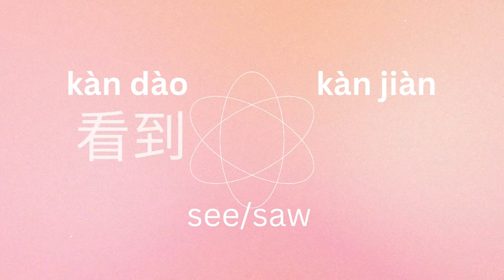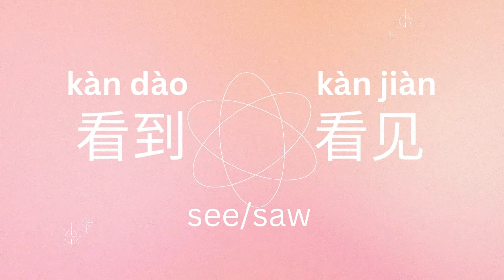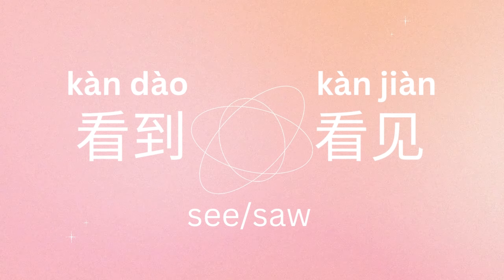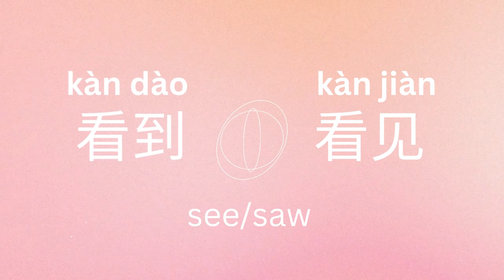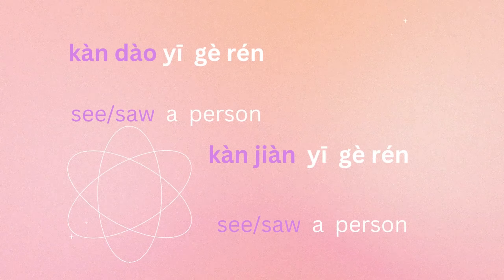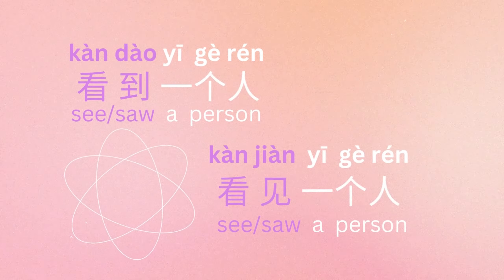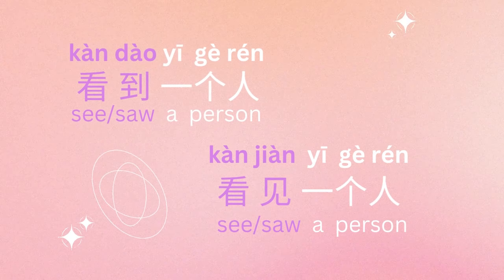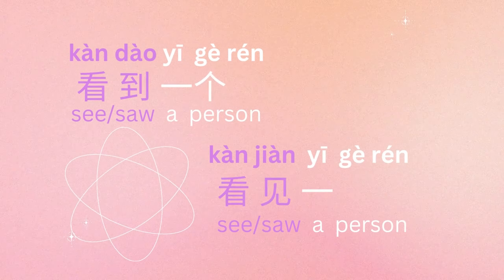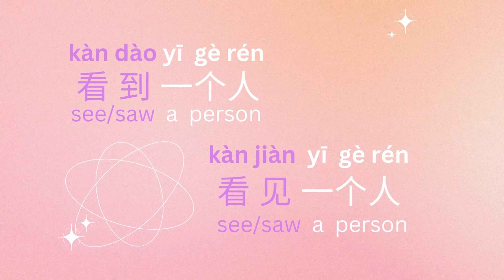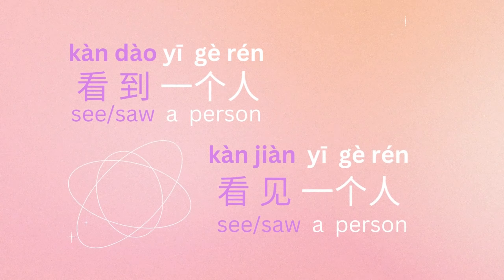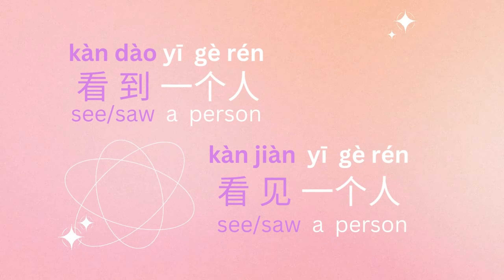So how to say I can see something? It's 看到 or 看见。 For example, 看到一个人 or 看见一个人。 一个人 means a person.